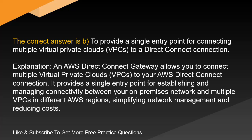Explanation. An AWS Direct Connect gateway allows you to connect multiple virtual private clouds, VPCs, to your AWS Direct Connect connection. It provides a single entry point for establishing and managing connectivity between your on-premises network and multiple VPCs in different AWS regions, simplifying network management and reducing costs.